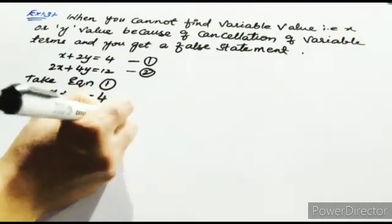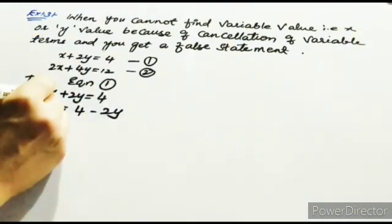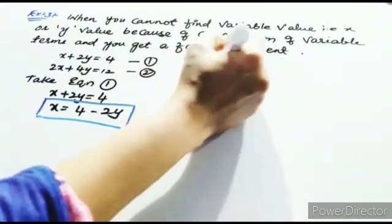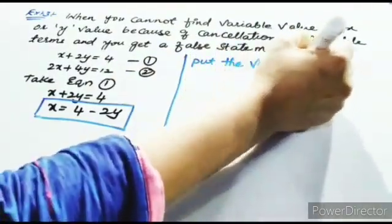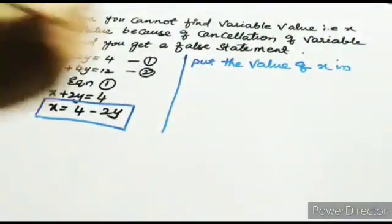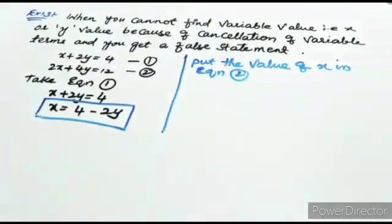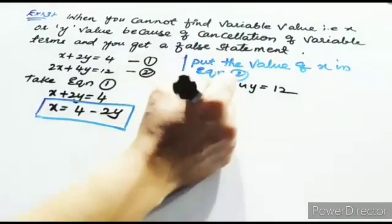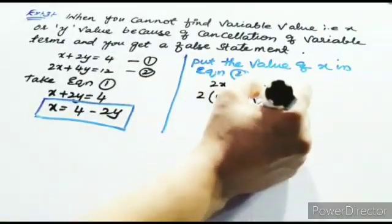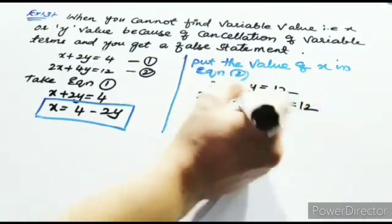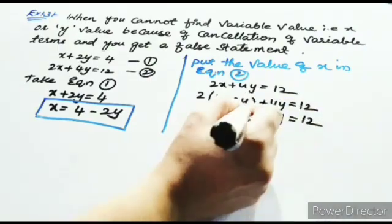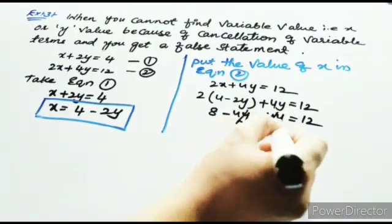From equation 1: x plus 2y equal to 4, so x equal to 4 minus 2y. After finding the value of x, put it into equation 2: 2x plus 4y equal to 12. Substituting gives 2 times (4 minus 2y) plus 4y equal to 12, which is 8 minus 4y plus 4y equal to 12. The 4y terms cancel, and you get 8 equal to 12.